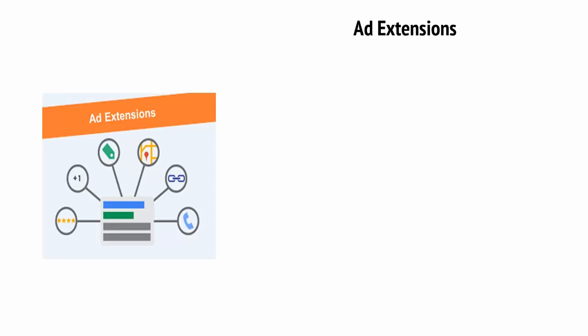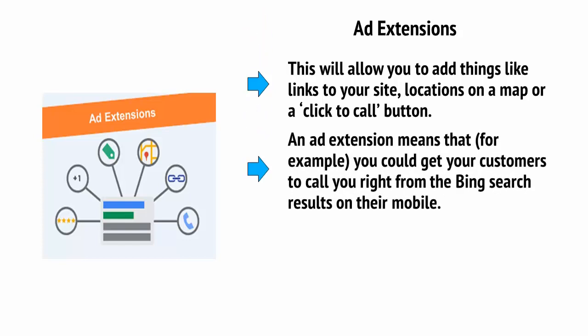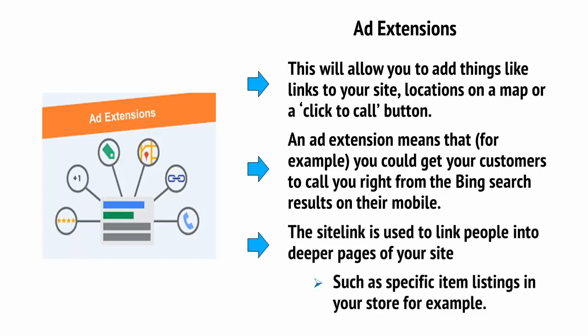Another neat feature of Bing is the ability to add ad extensions. This will allow you to add things like links to your site, locations on a map, or a click-to-call button. An ad extension means, for example, you could get your customers to call you right from the Bing search results on their mobile. The site link is used to link people into deeper pages of your site, such as specific item listings in your store.